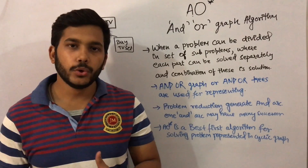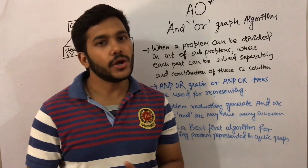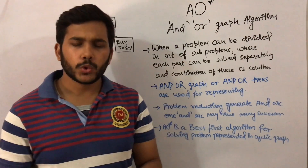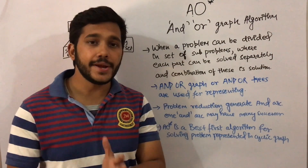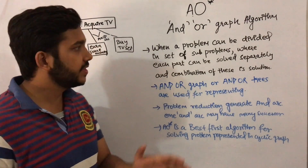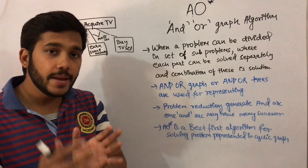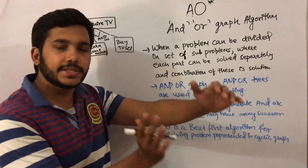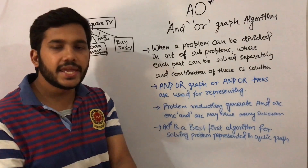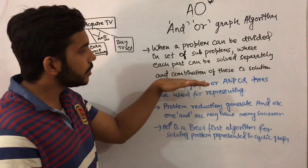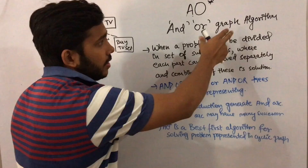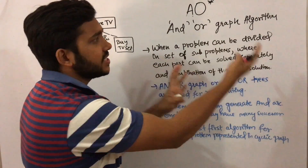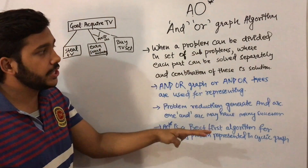In this video I am going to talk about AO* or the AND-OR graph algorithm. Basically, this algorithm is used when a problem can be divided into sub-problems, these sub-problems can be solved separately, and at the end they can be combined. This is the type of problem the AO* graph algorithm is designed to handle.